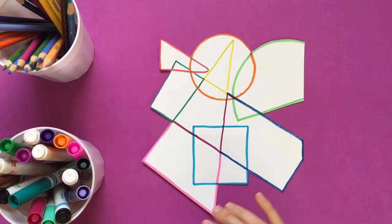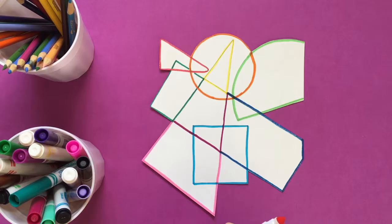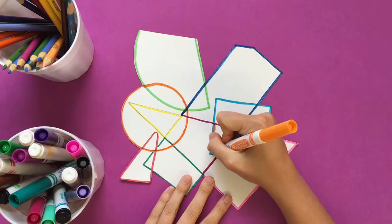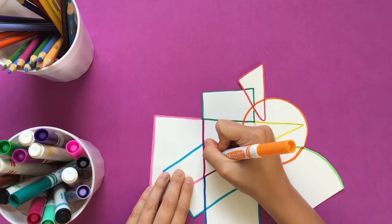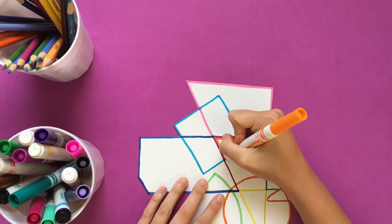I'm going to show you a couple of tricks for coloring in shapes. If you're using a marker, a good trick is to begin by outlining the inside part of that shape. It's going to make it easier to keep all of the color inside that shape if you outline it first.